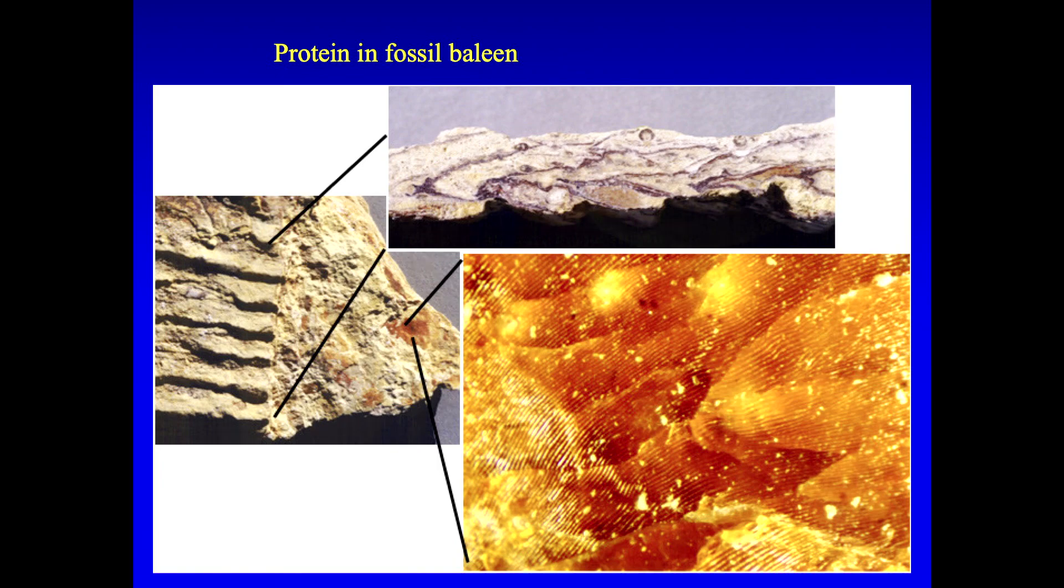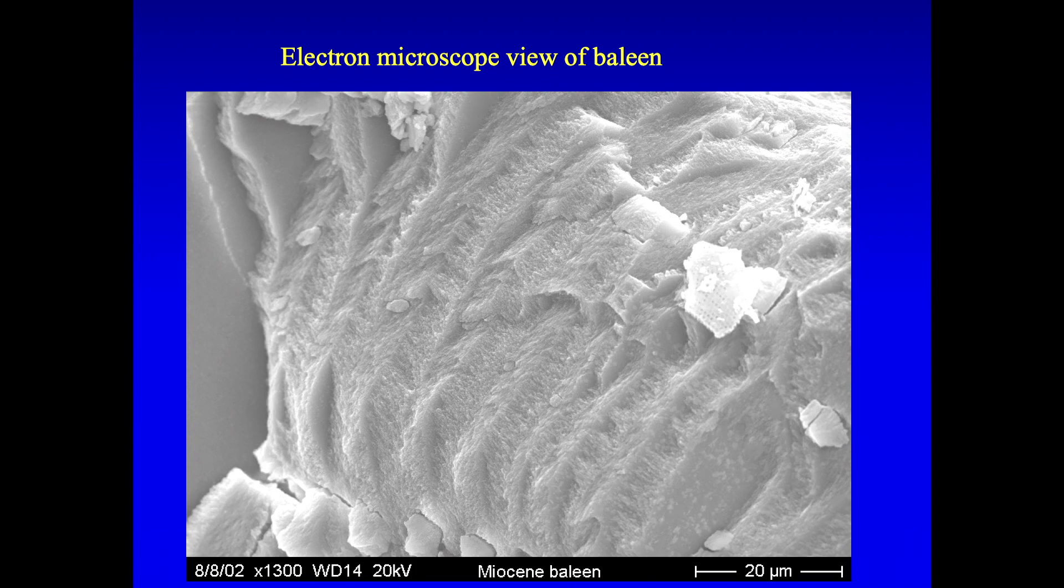This thing is supposed to be 12 million years old. And that's protein. I sent a sample of this to Mary Schweitzer, who's an expert on this kind of study of fossil molecules. And she identified that that's baleen. It was a soft material, which is protein. And she made a picture of this from an electron microscope. So that's a very high-resolution picture. And you see all these detailed layers within the protein.